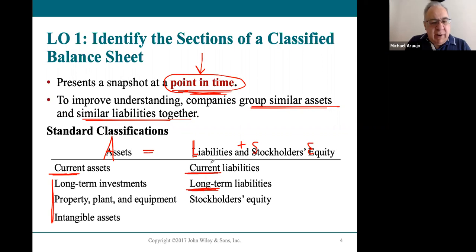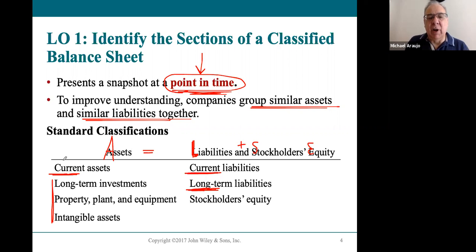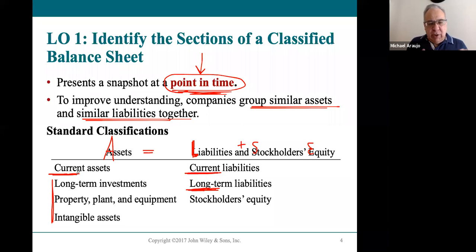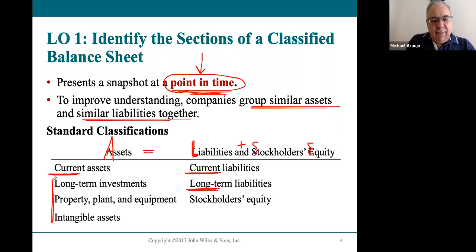Current and long-term are very easy to understand for liabilities. They're a little more confusing on the asset side, so the book spends a good amount of time explaining this. There are only two types of assets: current and long-term. Current assets are ones we're going to use within the year or turn into cash within a year. Anything above a year from the balance sheet date is a long-term asset.